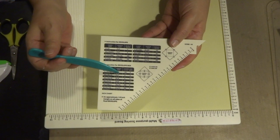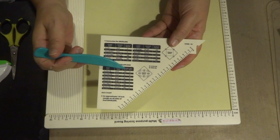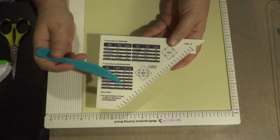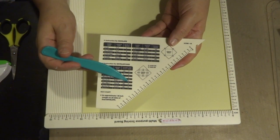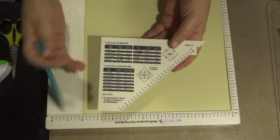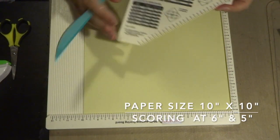The score for the outer and inner along there is five inches and six inches. So you need two score lines every time to go around.